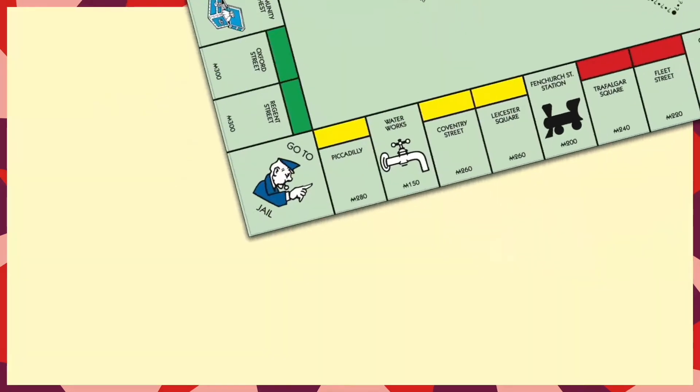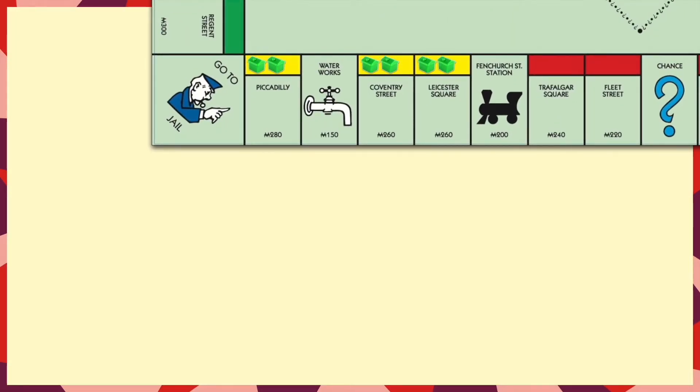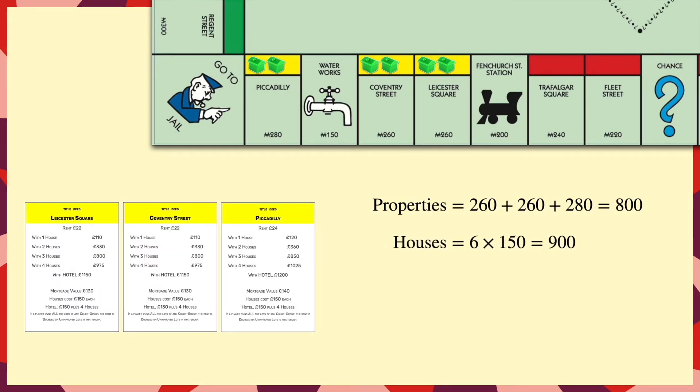As an example, let's say we were to buy the yellows and build two houses on each of them. If you're new to Monopoly or need a reminder, you need to own a whole set to develop houses and you have to build them evenly across the properties. We can work out how much the properties cost us and the cost of six houses at £150 per house for the yellows. The corresponding rent is shown on the cards.